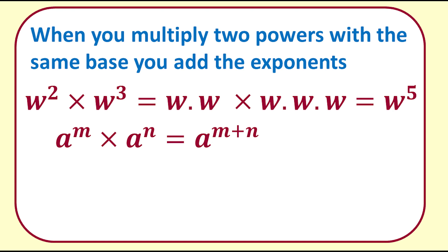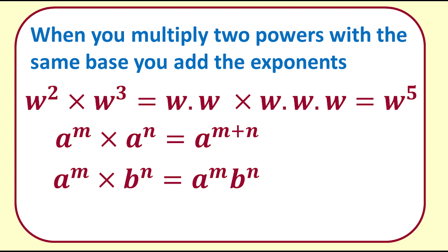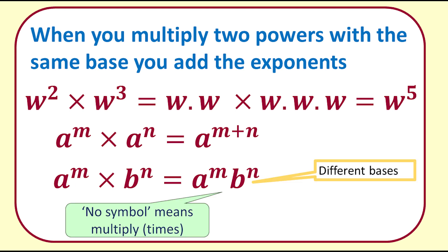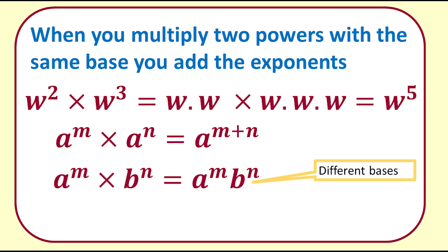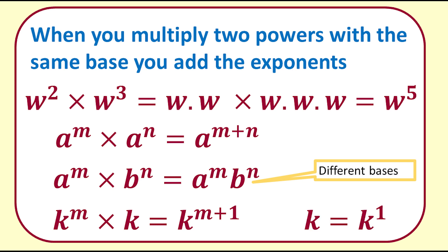This only applies when the bases are the same. In this example the two bases are different — a and b — so we cannot add the exponents, and the answer is a to the m times b to the n. As there is no symbol between the a and the b, that means times. Another confusing thing is that we generally do not write the number or variable to the power of 1. If there is no power showing, it means to the power of 1. So k to the m times k is the same as k to the m times k to the 1, which is k to the m plus 1.